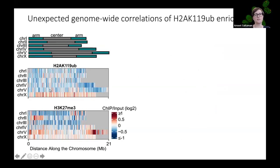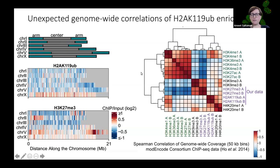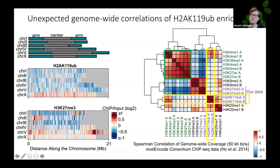Looking at genome-wide patterns, C. elegans chromosomes have heterochromatin blocks on the arms with a more euchromatic center. H3K27 trimethylation is enriched on the arms as expected, but H2A lysine 119 ubiquitylation is not enriched at heterochromatin — it is somewhat enriched on the X chromosome. Gathering ChIP-seq data from the modENCODE consortium and performing Spearman correlations, euchromatin and heterochromatin marks cluster separately, and ubiquitylation is not highly correlated with H3K27 trimethylation but does correlate with H3K4 monomethylation.